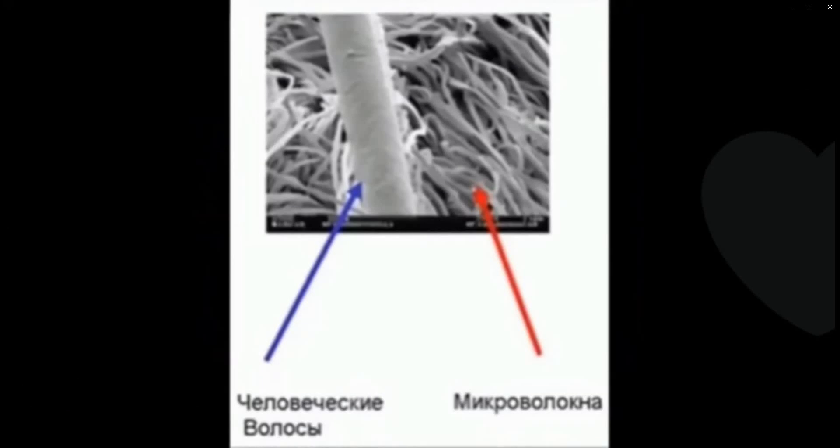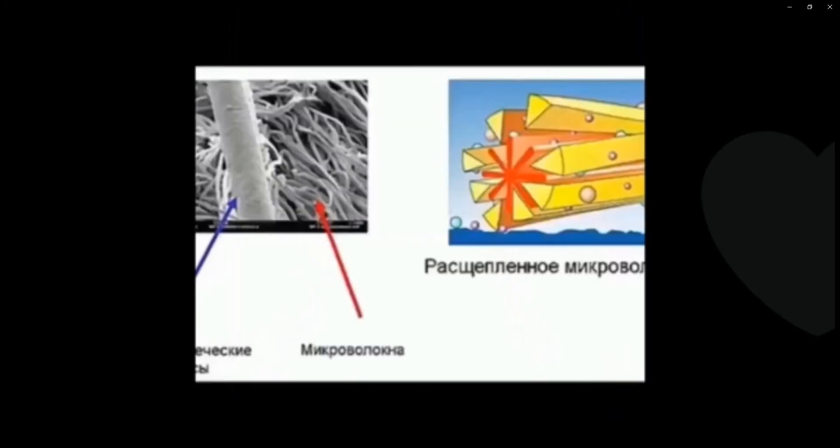The production technology is very complicated and impossible to weave on a regular machine. The thread of this microfiber divides into sectors along the radius, and this can be seen underneath a microscope.